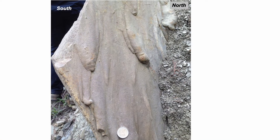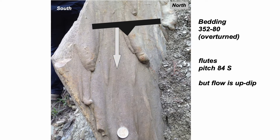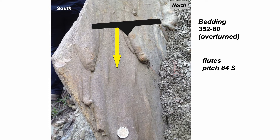Let's analyze this example. The bedding is overturned so we're looking at the undersurface. On that surface we can see the flute cast orientation: they're plunging down at a pitch of 84 degrees from the southern end of the strike symbol. We need to realize that the flow direction recorded by those flutes is up the bedding plane in its current orientation. We'll plot the bedding and then the flutes as an axis, then determine the paleocurrent direction.